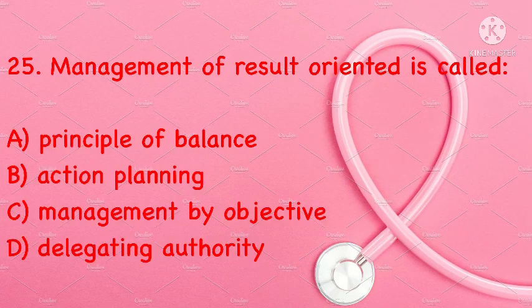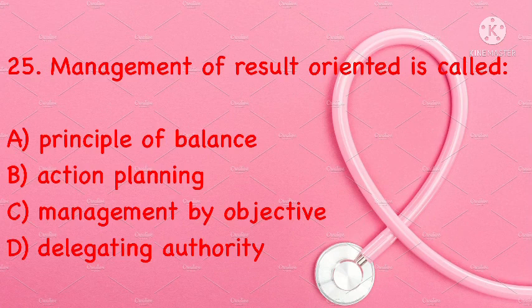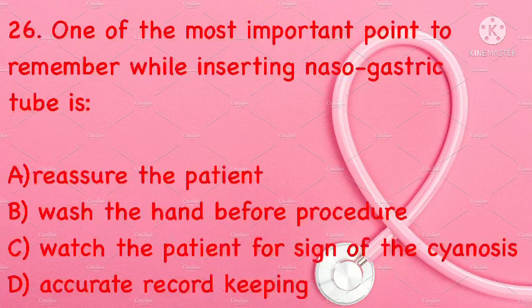Management of result-oriented is called: principle of balance, action, planning, management by objective, or delegating authority. Correct answer is C: management by objective.